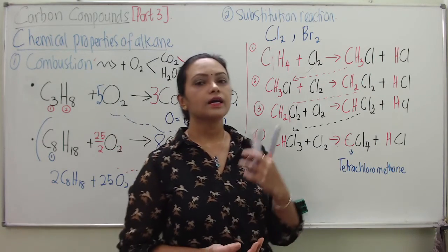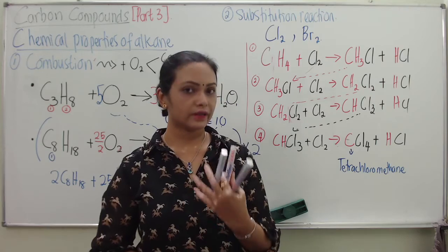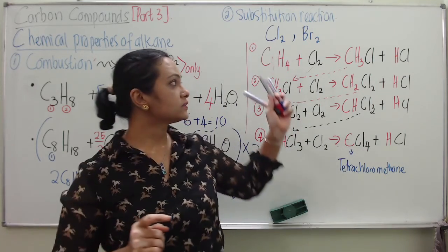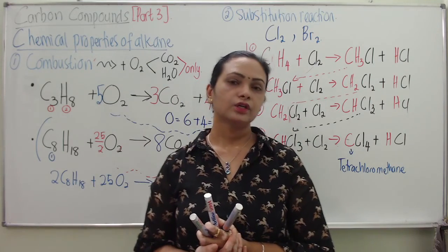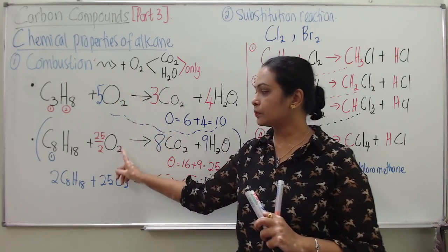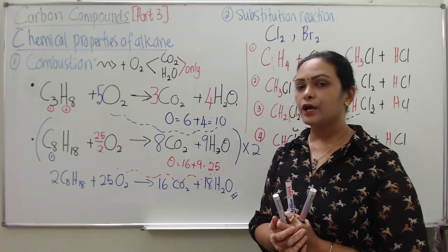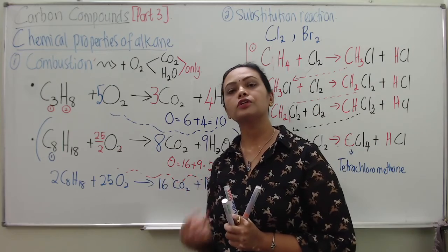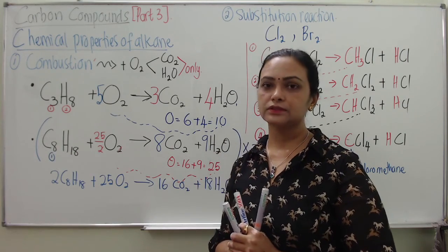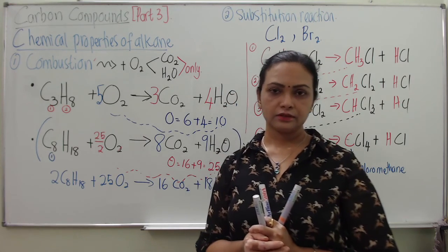I hope you all can understand the chemical properties of alkane. Remember: alkane is saturated, thus it is not very reactive, and it only has two chemical properties — combustion and substitution reaction. It is important to know how to balance the combustion equation, as this knowledge will be useful when balancing equations for combustion of alkene and alcohol, which we will cover in following parts of the carbon compound videos. Thank you for watching. See you all.